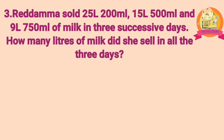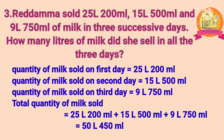Third problem: Redema sold 25 liters 200 ml, 15 liters 500 ml, and 9 liters 750 ml of milk on 3 successive days. How many liters of milk did she sell in all 3 days? Solution: quantity sold on day one is 25 liters 200 ml, day two is 15 liters 500 ml, and day three is 9 liters 750 ml. Total is 25 L 200 ml plus 15 L 500 ml plus 9 L 750 ml, which equals 50 liters 450 ml.